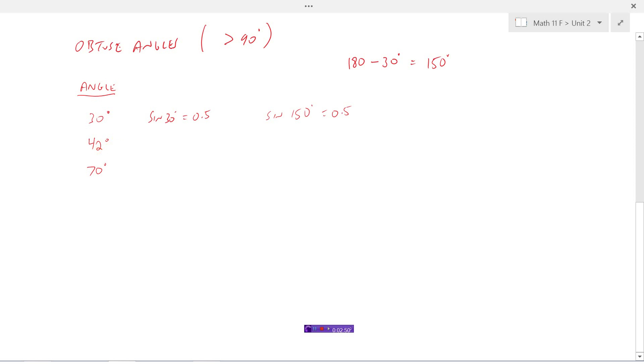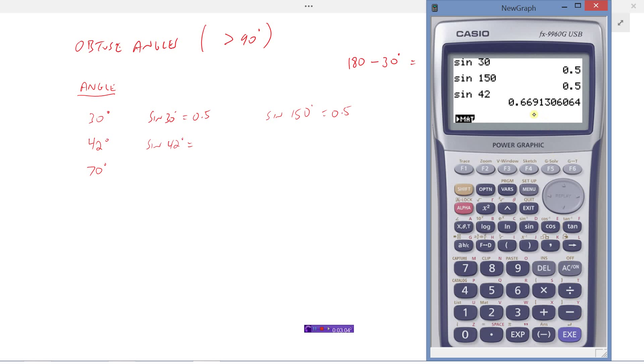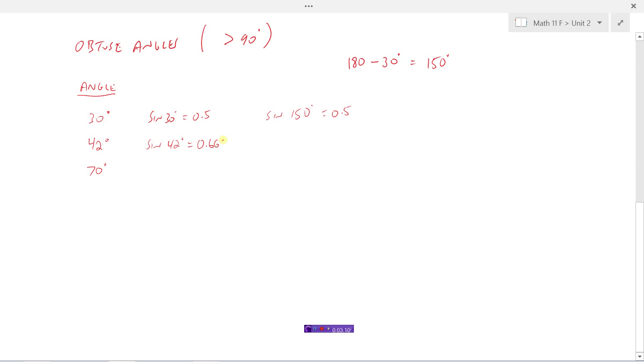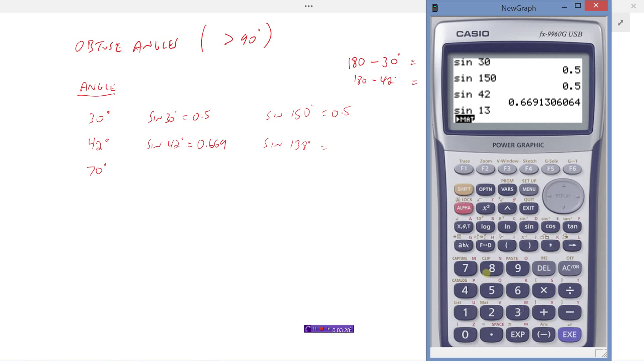Let's see if that's true for this other angle. Let's try the sine of 42 degrees. If we were going to figure out a triangle that had an angle of 42 degrees, the sine ratio, which is opposite over hypotenuse, would be approximately 0.669. If I go 180 minus 42, that would be 138 degrees. Let's see if that's exactly the same ratio. And it is, 0.669.